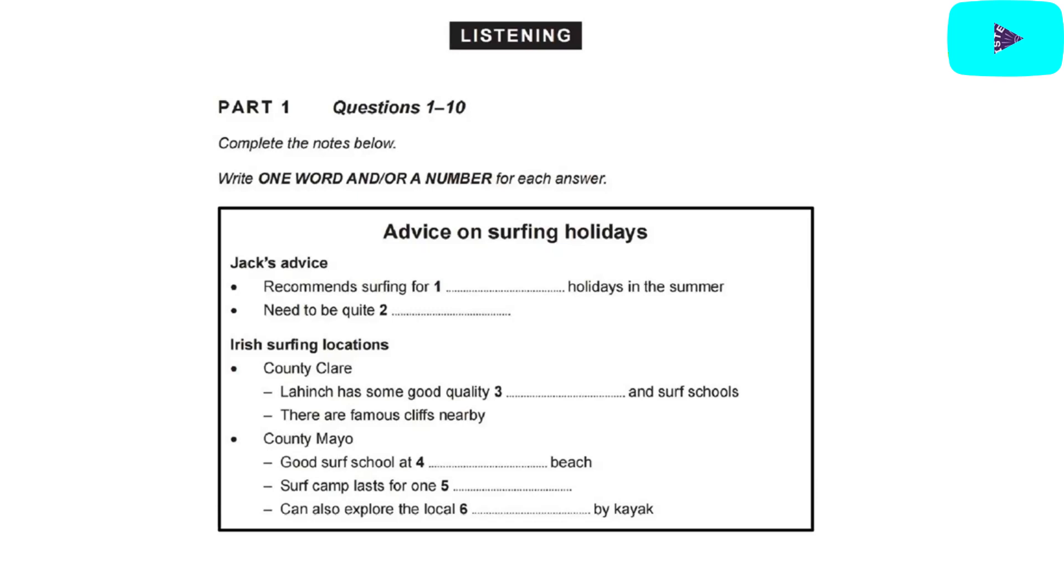Test 3. This is the IELTS Listening Test. You will hear a number of different recordings and you will have to answer questions on what you hear. There will be time for you to read the instructions and questions and you will have a chance to check your work. All the recordings will be played once only. The test is in four parts. At the end of the test, you will be given ten minutes to transfer your answers to the answer sheet. Now turn to Part 1.